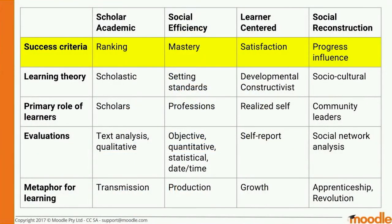The four categories are: Scholar Academic, which is more about the traditional classroom; Social Efficiency, which is about getting a group of 30 students up the mountain at the same time — think of it as a workplace model where everyone needs to reach a goal; Learner Centered, which is familiar to many of us; and Social Reconstruction, which you might also know as social justice.